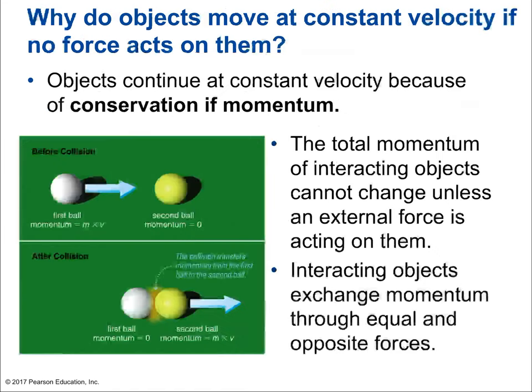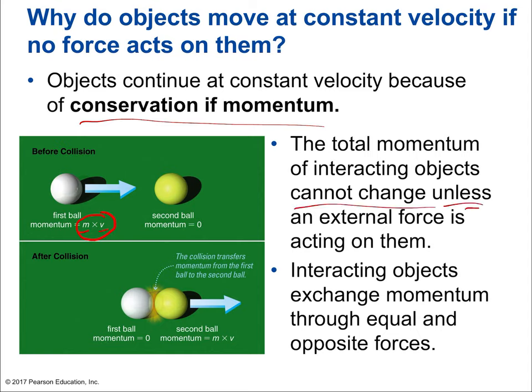Some of these ideas may seem similar from Chapter 3 — we have discussed them, but I'm going to go over them again. Why do objects move at constant velocity if no force acts on them? The answer is the law of inertia. Objects continue at constant velocity because of conservation of momentum. Conservation of momentum and the law of inertia are two ways of saying the same thing. Momentum is just mass multiplied by velocity — kilograms times meters per second. The total momentum of interacting objects cannot change unless an external force is acting on them.